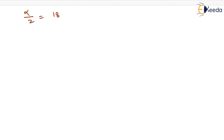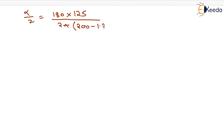α/2 = 180 × S / (2π × (R − d)) = 180 × 125 / (2π × (200 − 1.75)). On solving this, we get the value of α/2 as 18.063 degrees.